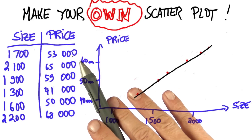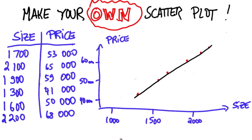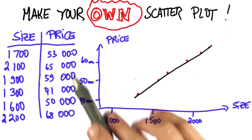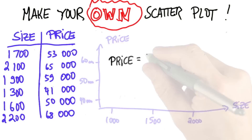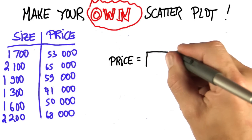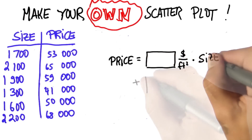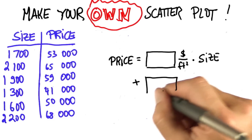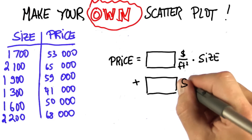That's amazing. Even though there's not a fixed dollar price per square foot, the relationship is linear. Here's a really challenging question. In this data, the price is linear in the size plus or minus a constant dollar amount.